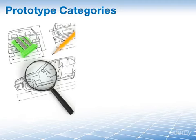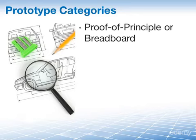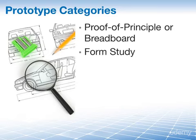Prototypes fall into four basic categories. First, a proof of principle or breadboard prototype tests aspects of the intended design without simulating visual appearance, choice of materials, or manufacturing process — used to make decisions about design options or further development. Second, a form study prototype allows designers to explore the basic size, look and feel of a product without simulating actual function, helping to assess ergonomic factors. These are intended for internal usage as the materials are usually not durable for consumers.